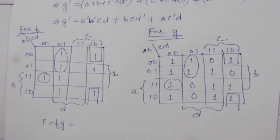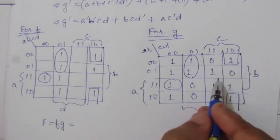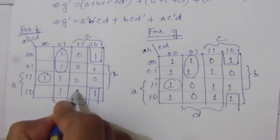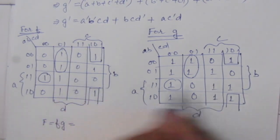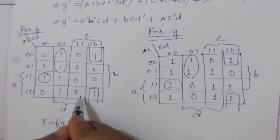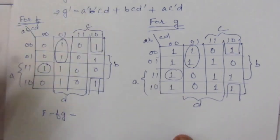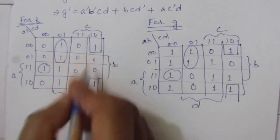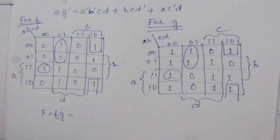Checking remaining cells: wherever one appears alongside a zero, they cancel out. The cells with one-zero, zero-zero, and one-one-zero combinations all cancel out. We are left with only the cells that are one in both maps simultaneously. From these common cells we can directly write the simplified sum of minterms expression.